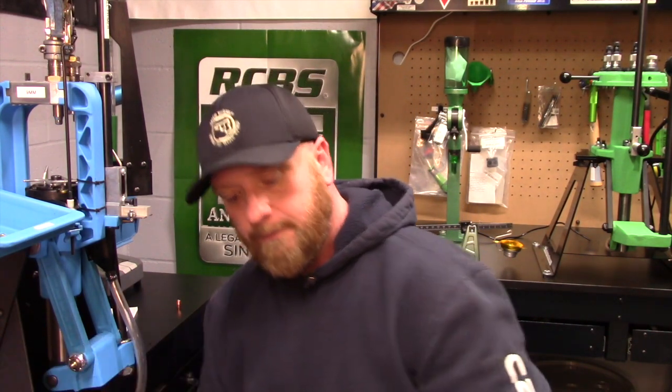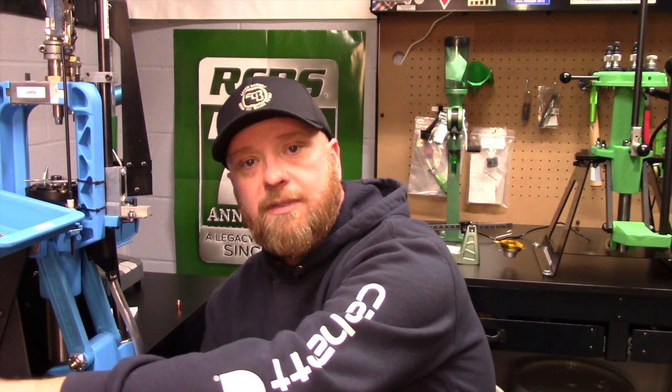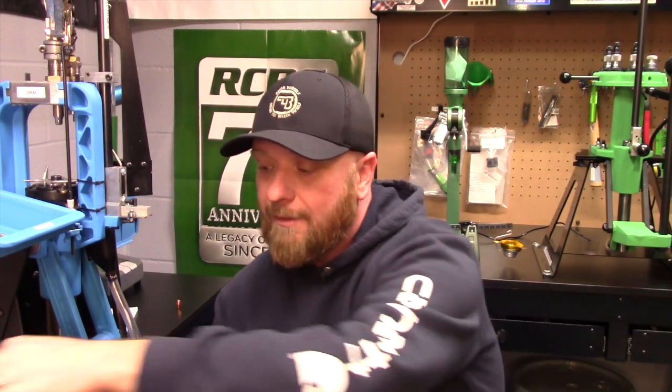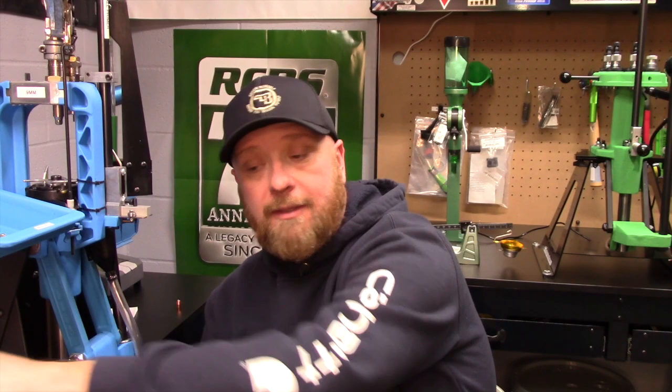The first die we're going to work with is the Dillon seating die and then we're going to set the Dillon crimp die. In the Dillon die sets we do the bullet seating and crimping in two operations which is probably my preference.